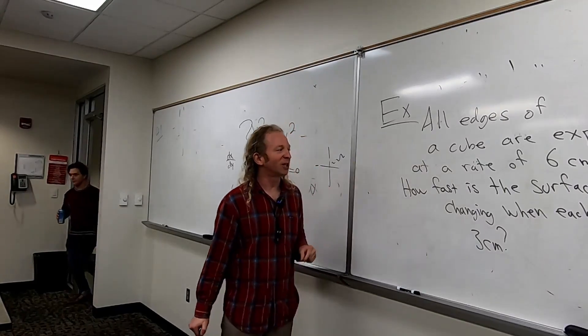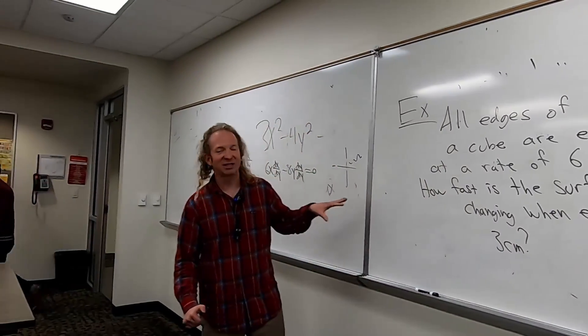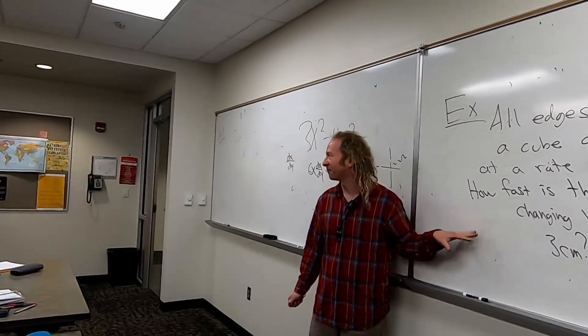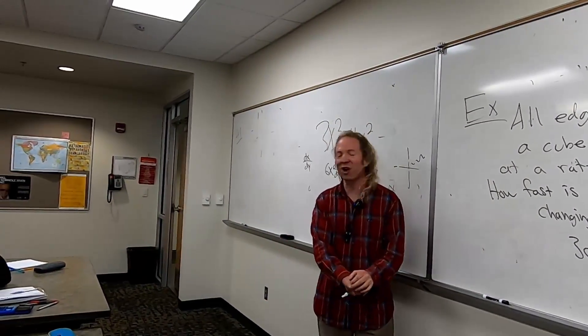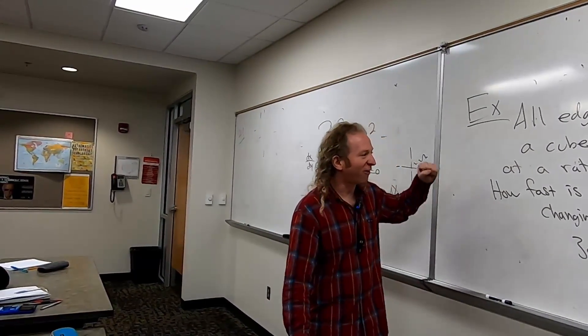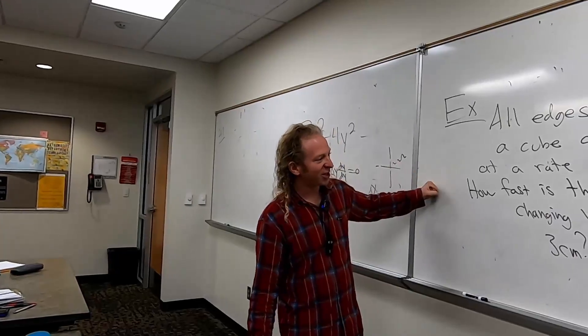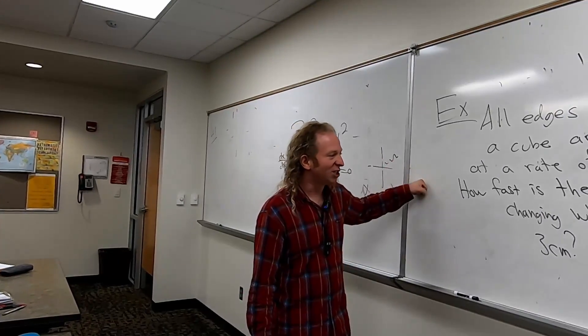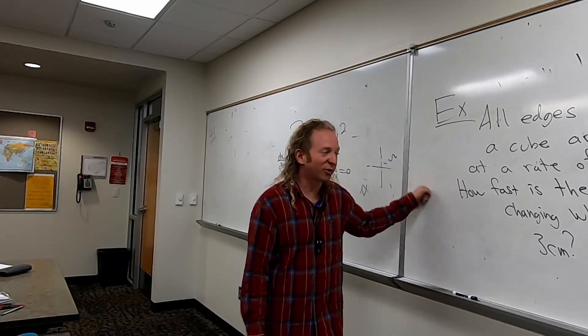All edges of a cube are expanding at a rate of six centimeters per second. How fast is the surface area changing when each edge is three centimeters?